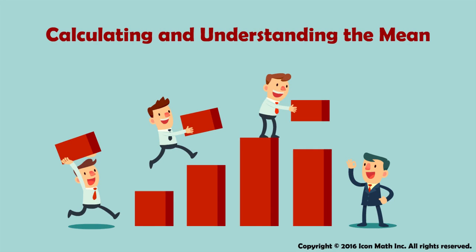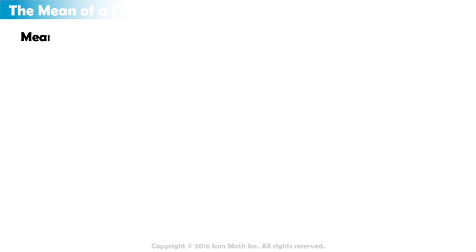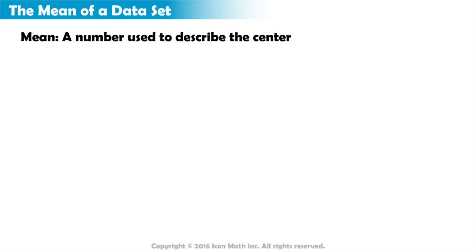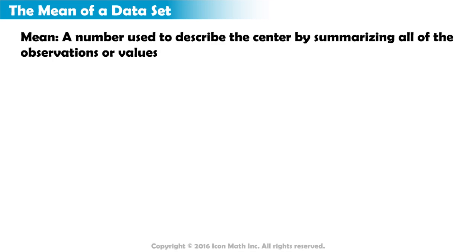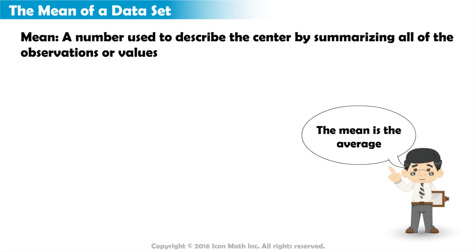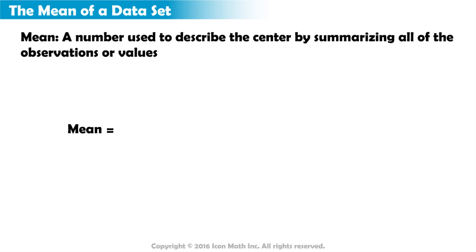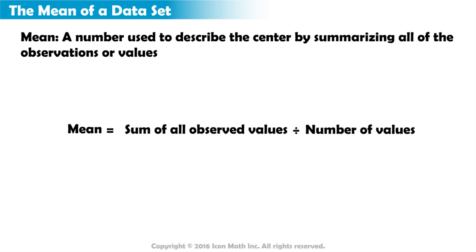Calculating and understanding the mean. The mean of a data set is a number used to describe the center by summarizing all of the observations or values. The mean is often referred to as the average. To calculate the mean, we find the sum of all of the observed values and then divide by the number of observations.